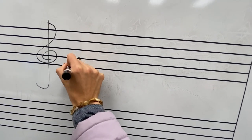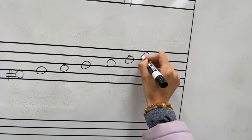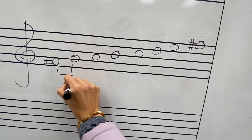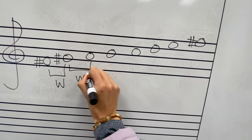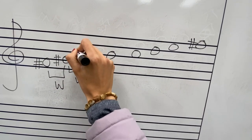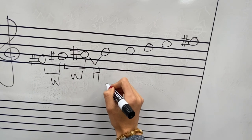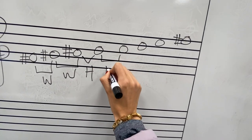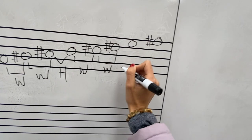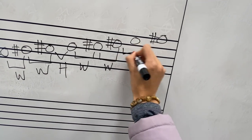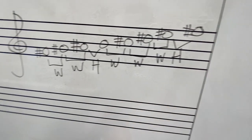Let's do F sharp major. I'm just going to do the same thing, building up the scale. I know from one to two I need a whole step — F sharp to G is a half step, so we need to raise it to make a whole step. From two to three we need another whole step — G sharp to A is a half step, so I need to sharp that note. A sharp to B is a half step, so that's good for scale degree three to four. B to C is a half step and I need that to be a whole step, so I need to raise that up. C sharp to D is a half step, so I'm going to raise that. D sharp to E is a half step and I need a whole step, so I'm going to sharpen that. And then E sharp to F sharp — we get a half step. So there you go: F sharp major.